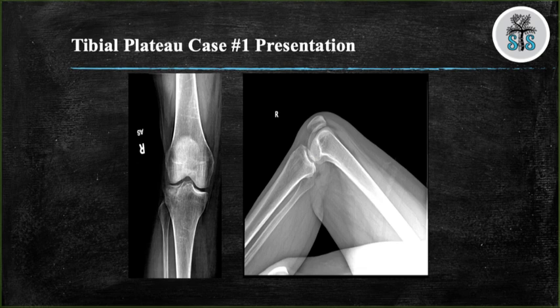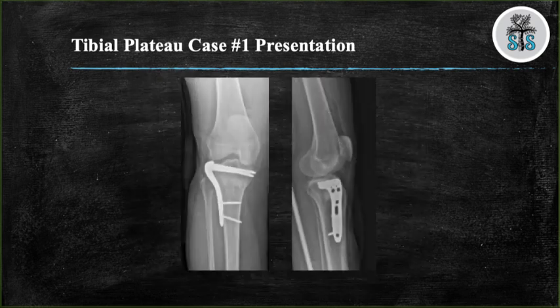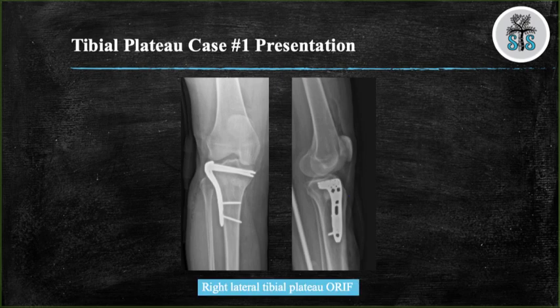We have two views, AP and lateral, of a right knee demonstrating a non-displaced lateral tibial plateau fracture. This fracture was treated with a lateral buttress plate.